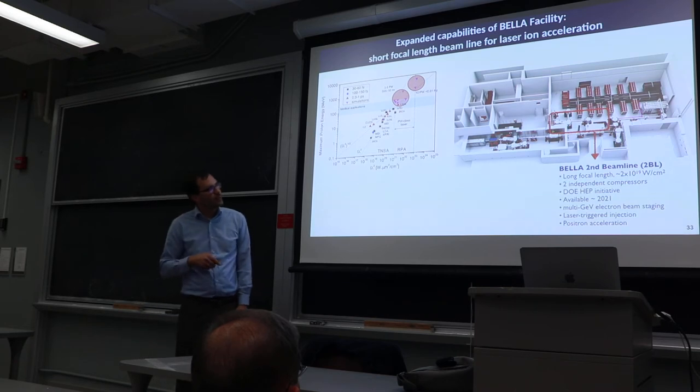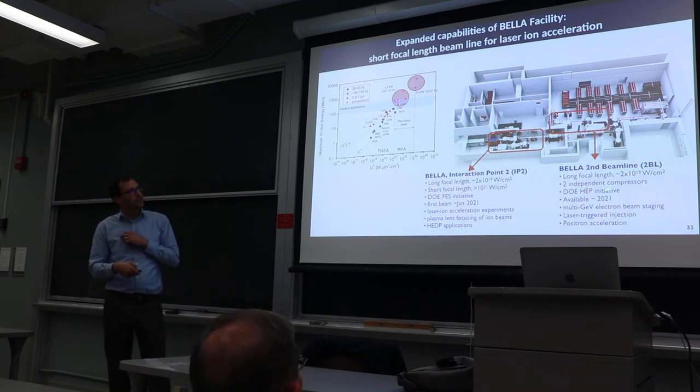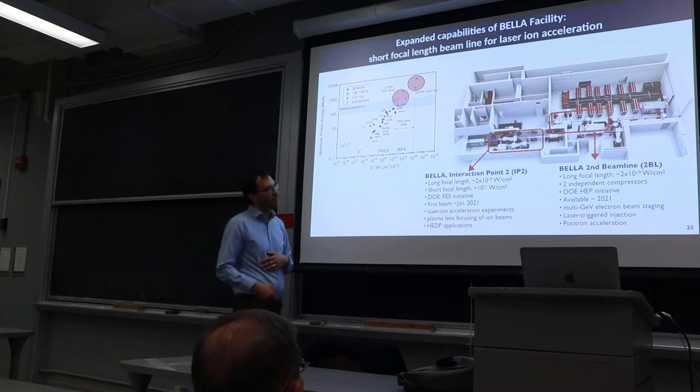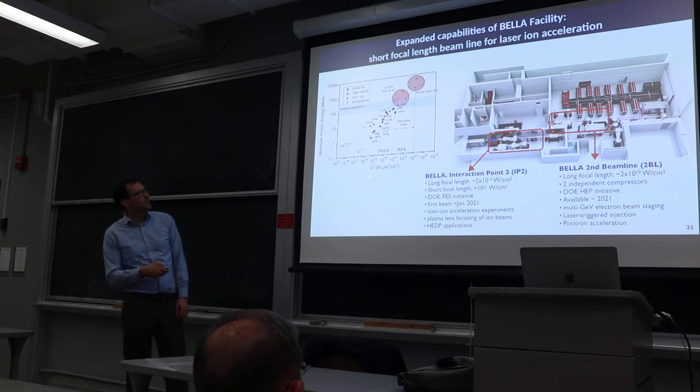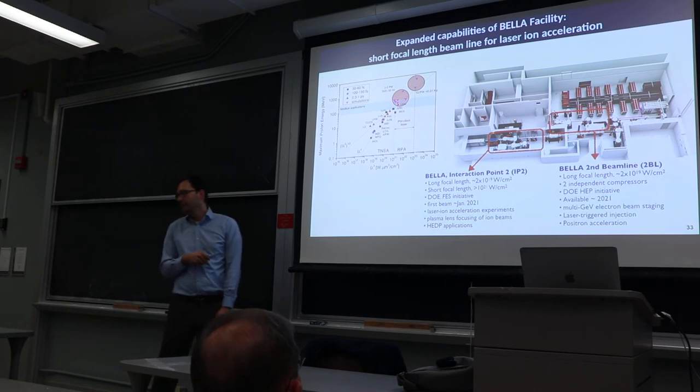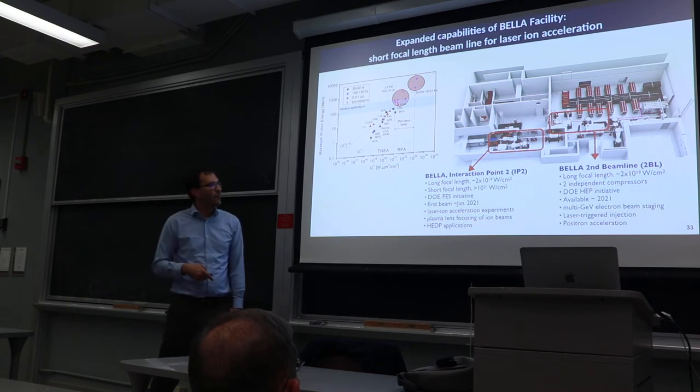I told you about the second beam line project with two independent compressors. At the same time we're upgrading BELLA—our facility—we're also adding a second interaction point called IP2. This will be a short focal length to get us up to about 10^21 watts per centimeter squared, which will get us to about 100 MeV protons. This is an initiative by DOE Fusion Energy Sciences and should be completed about a year from now.